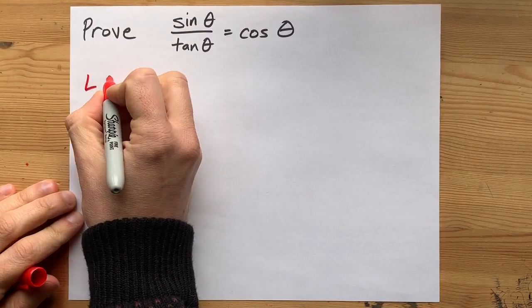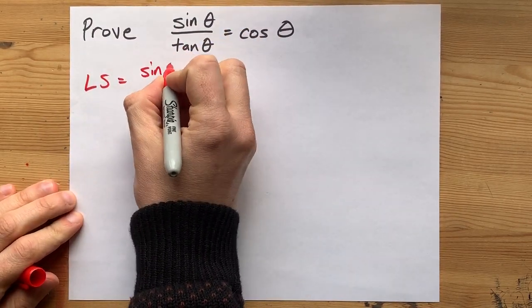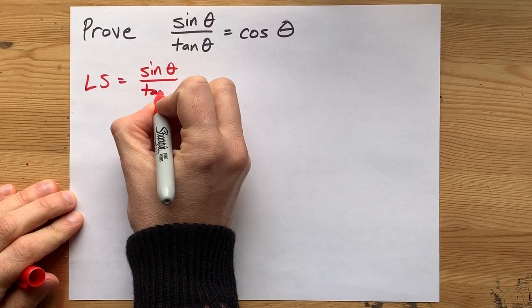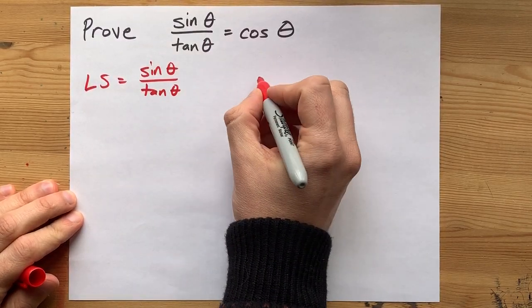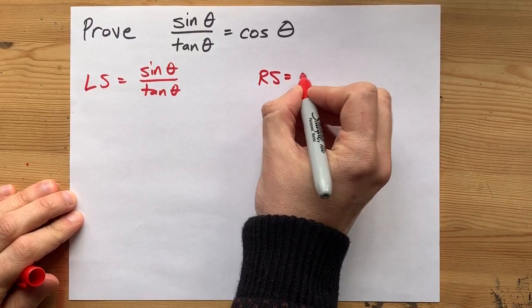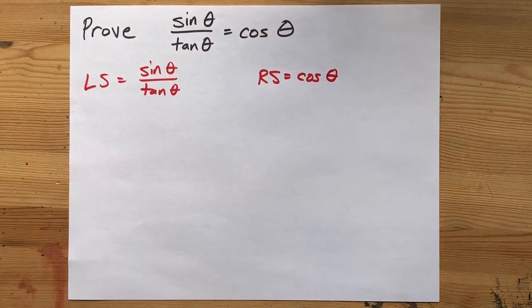The first thing that I always do is I break my identity up into the left side and right side. But more importantly, I always like to replace my tan thetas with sine over cos.